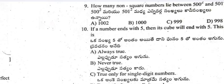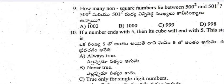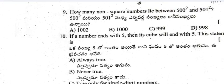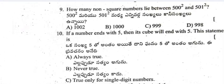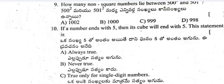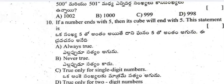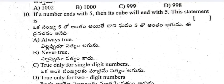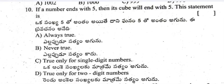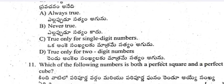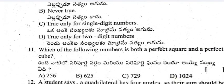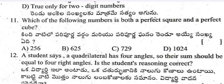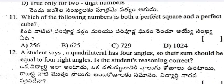Question 9: How many non-square numbers lie between 500 squared and 501 squared? Question 10: If a number ends with 5, then its cube will also end with 5 — all four options are given for this statement.